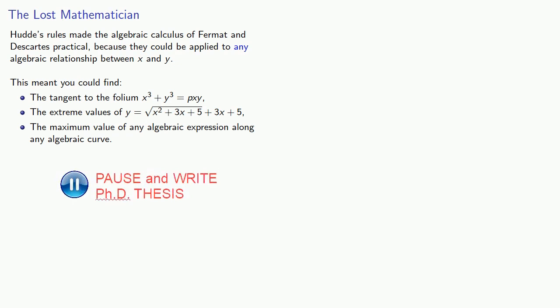Hood's two letters established him as one of the rising stars of mathematics. Unfortunately, Hood chose to abandon a promising career as a mathematician and went into politics.